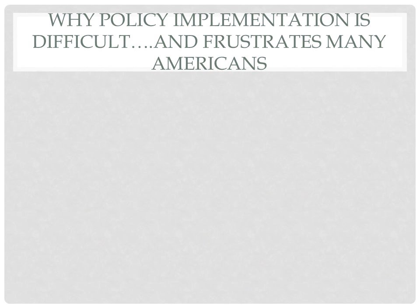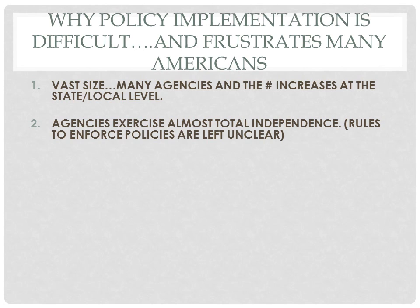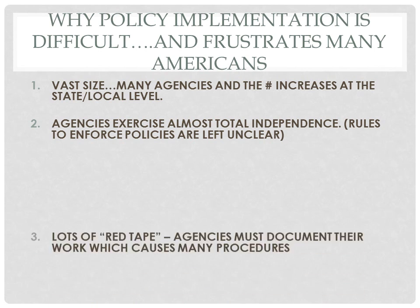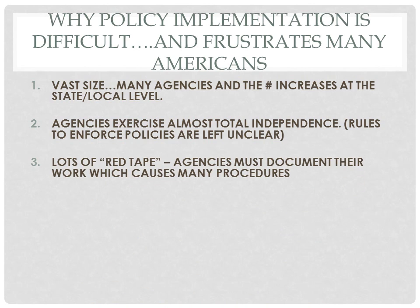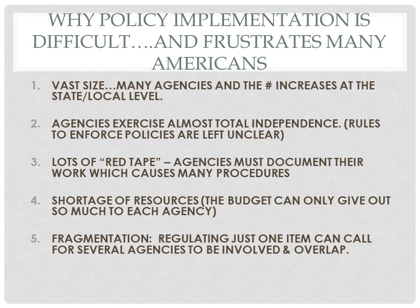The bureaucracy's job of implementing policies passed by Congress today can be very difficult and frustrating for many Americans. First, the size of the bureaucracy includes many agencies, and as they increase at the state and local level, it creates more obstacles for people to get around. Second, agencies exercise almost complete independence in how they choose to implement policy, since policies are written in such a vague and unclear way that agencies pretty much get to make their own rules. Third, there are tons of red tape or standard operating procedures that people must go through to get in touch with a bureaucrat, and agencies must document their work, making the process very lengthy. Fourth, there's a shortage of resources because the budget can only give so much money to each agency. Finally, there's fragmentation — regulating just one item or industry could take many different agencies to cover all the various aspects, which gets expensive.